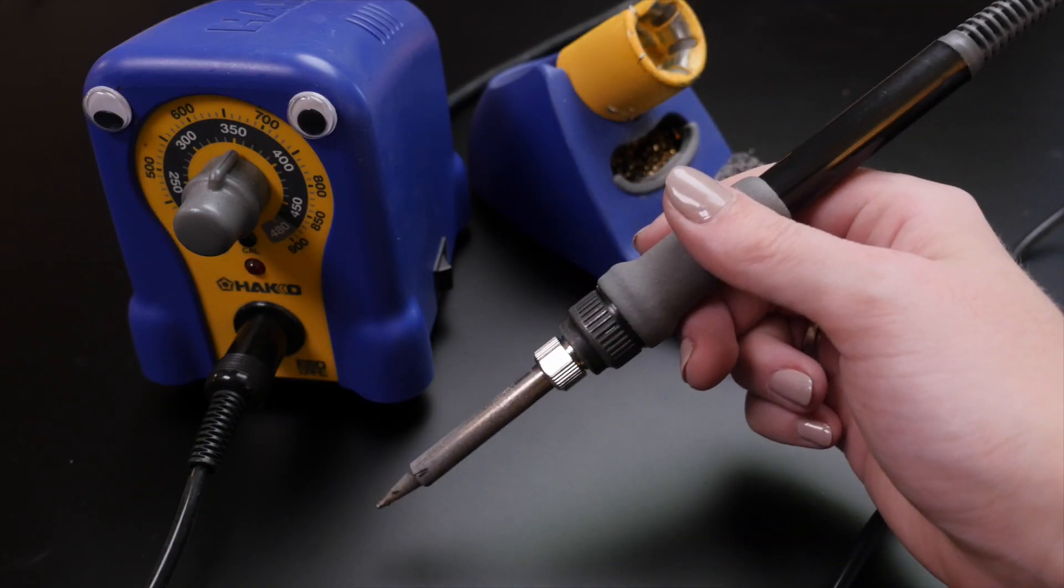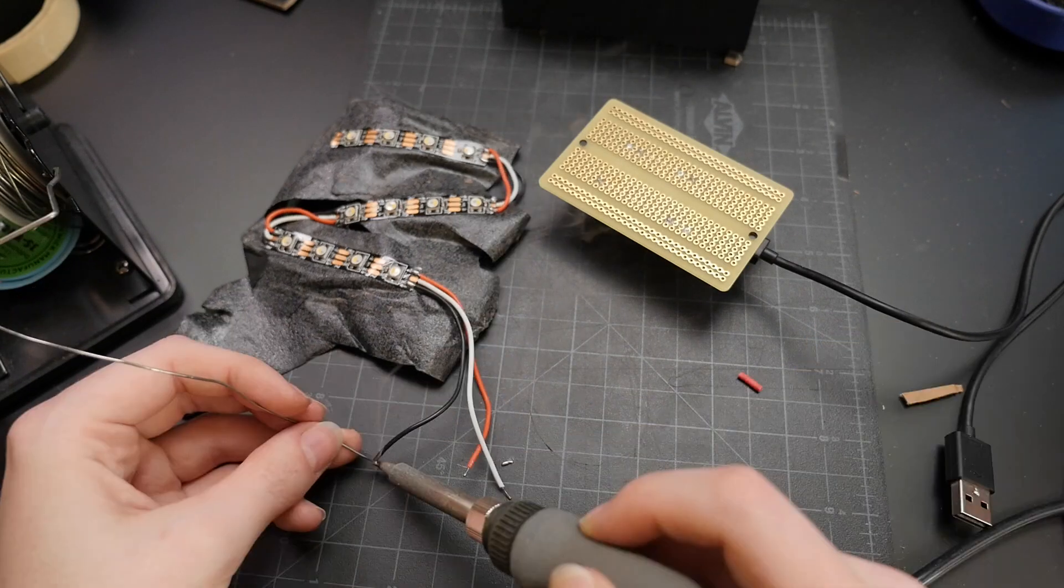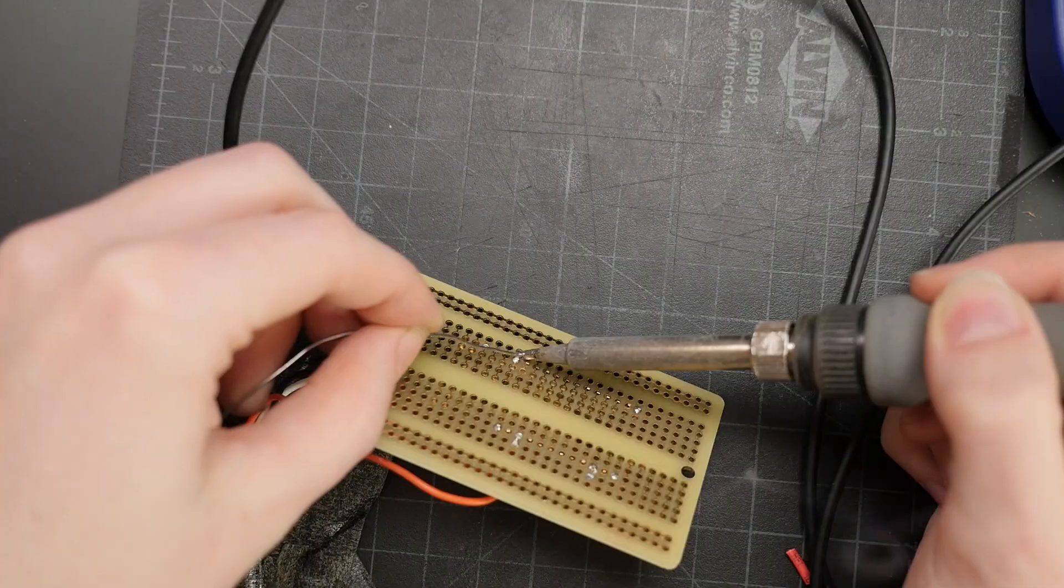To create a margin for the display away from the corner, I used a perma-proto board, which also comes in handy for attaching the NeoPixel power, ground, and signal wires.